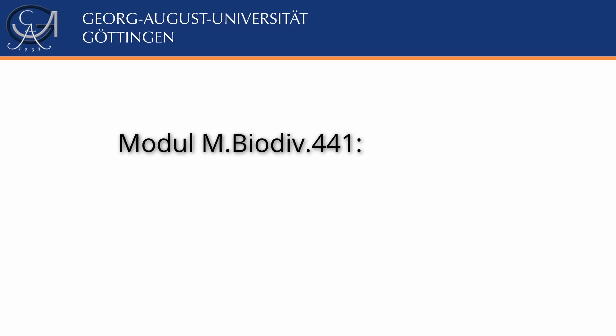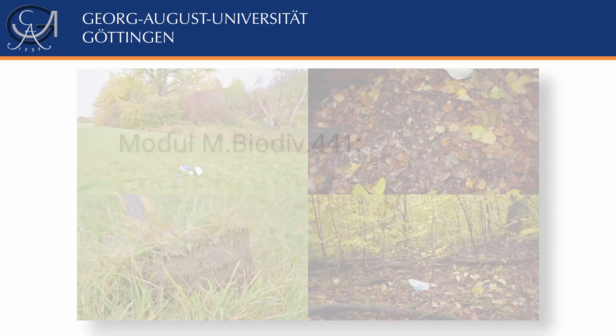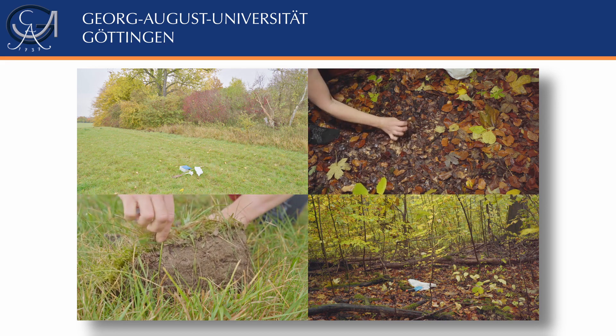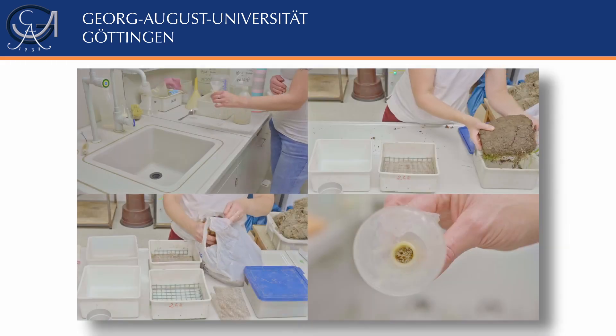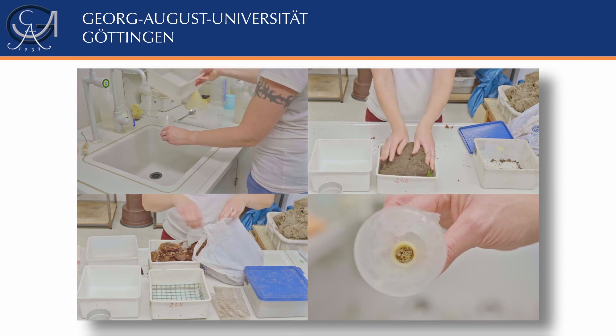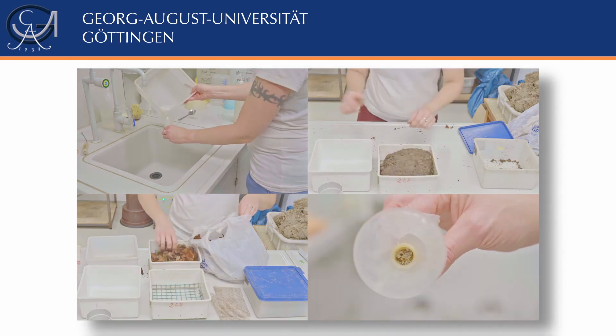Welcome to the master module Evolutionary Ecology. This video explains how to collect soil-living organisms, in particular the mesofauna. We collect animals from two different habitats: from forest and from grassland. The second part shows how we extract animals from the soil matrix and how to collect them for storage and further analysis.